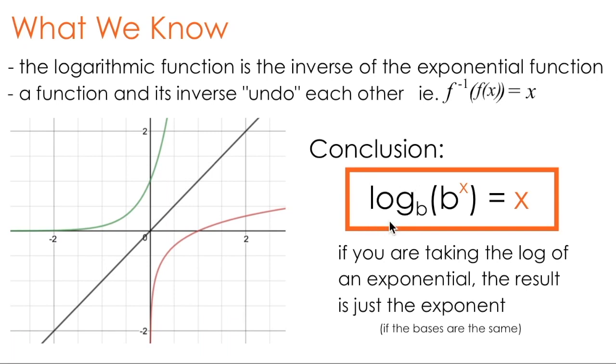So there's a pretty helpful conclusion we can draw from these two points, and that's that if I take the log of an exponential, and the base of the log is the same as the base of the exponential, the expression simplifies into just the exponent. And this is a direct consequence of the second point here. Subbing a function like the exponential into its inverse, like the log, has an undoing effect which results in just the exponent.